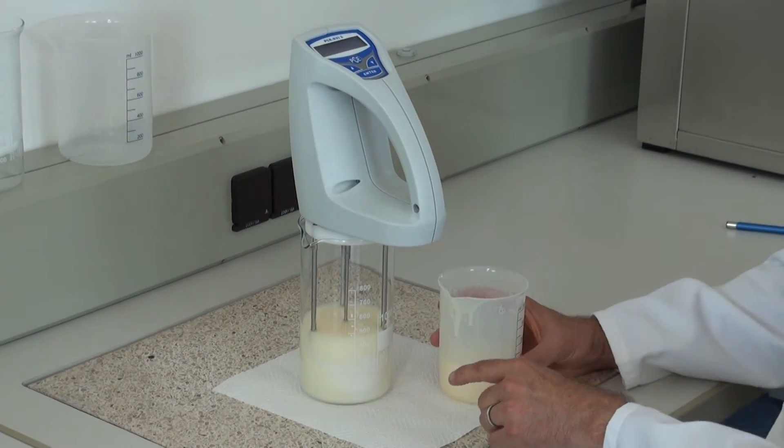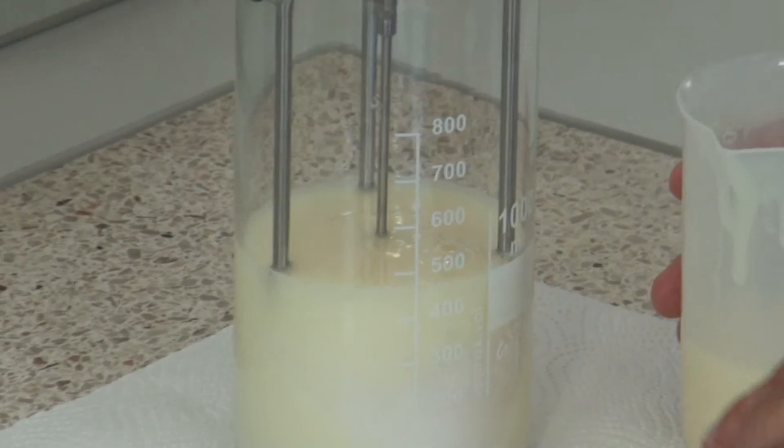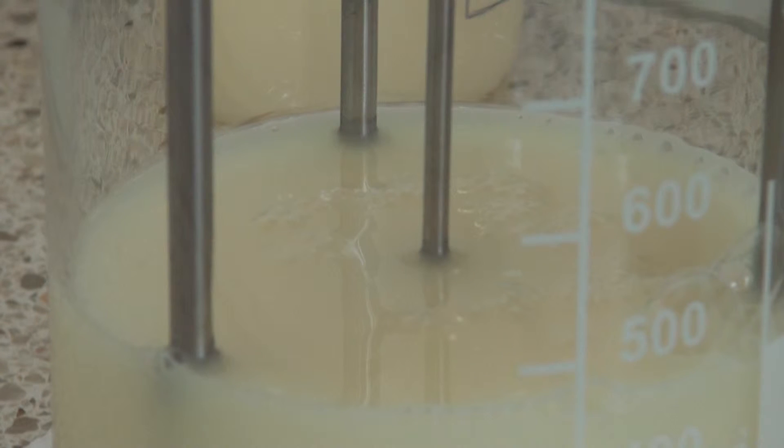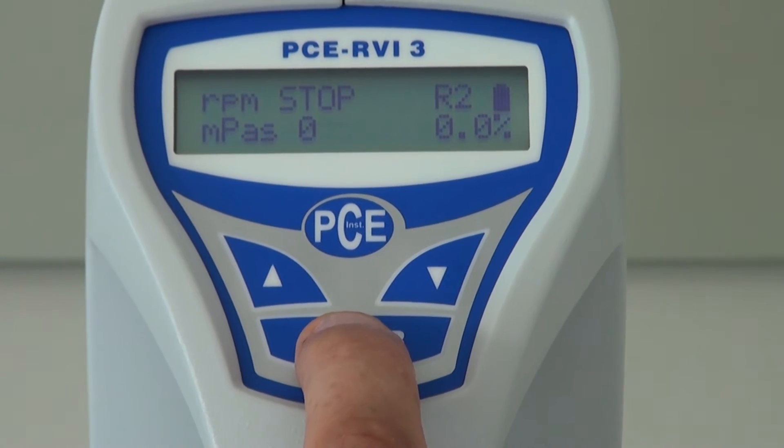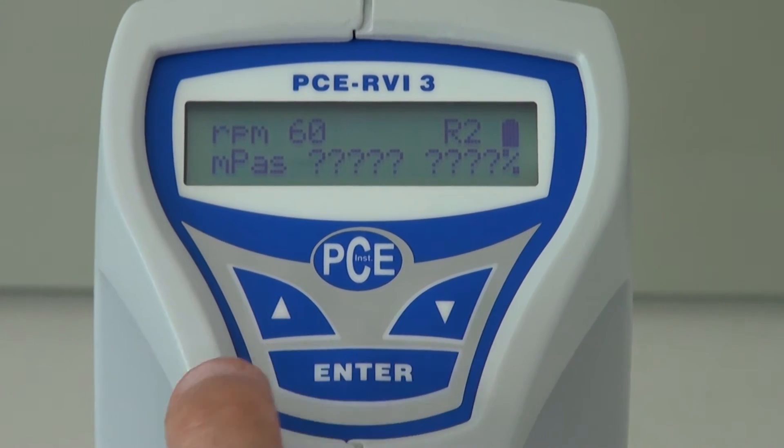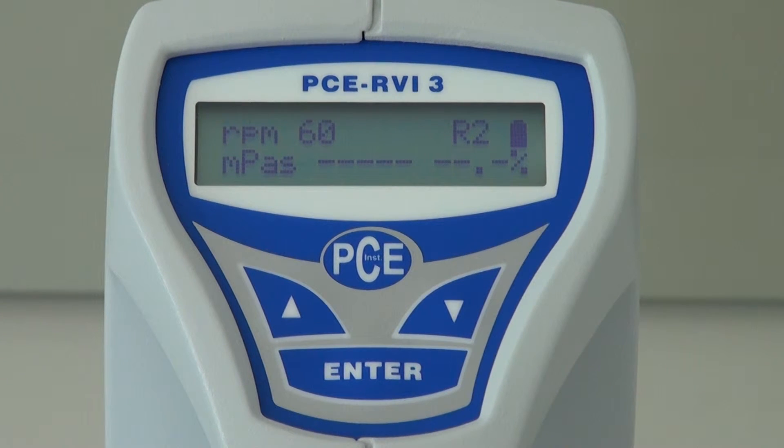Here is to observe that the filled amount covers the groove of the rotation body. By activating the enter key the measurement is started. First of all the rotation spindle starts to turn. Until a constant revolution is achieved. Here it is 60 revolutions per minute.